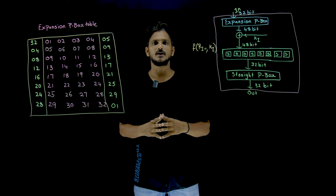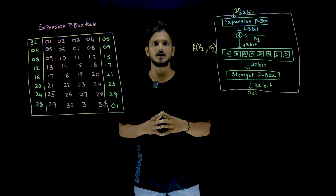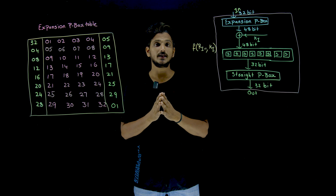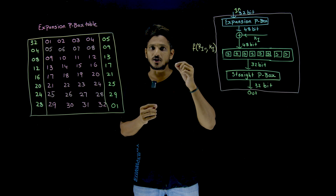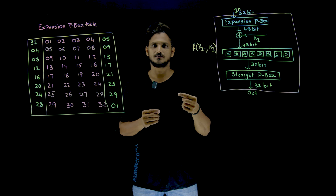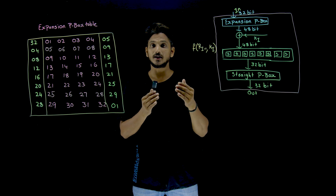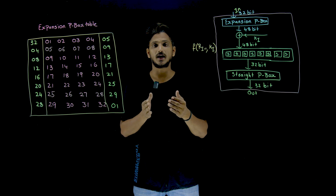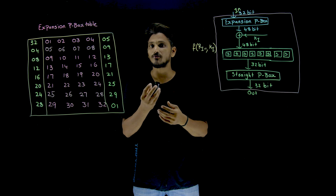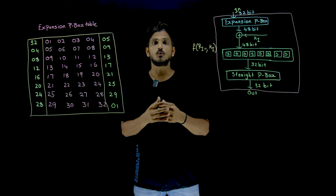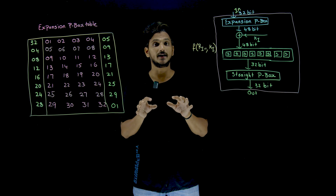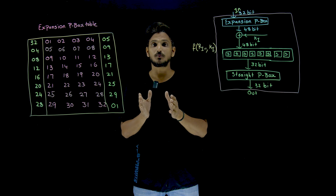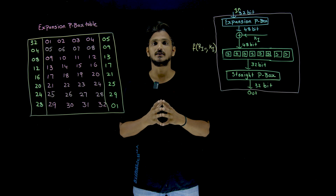Hi, welcome to Learning Monkey, I am Raghu here. In our last class we clearly discussed about what happens inside each round in DES. We discussed that inside each round we are going to have a Feistel function. What happens inside that Feistel function is what we are going to understand in this class. Please watch our previous class and come back here. The link for the playlist is provided in the description below.